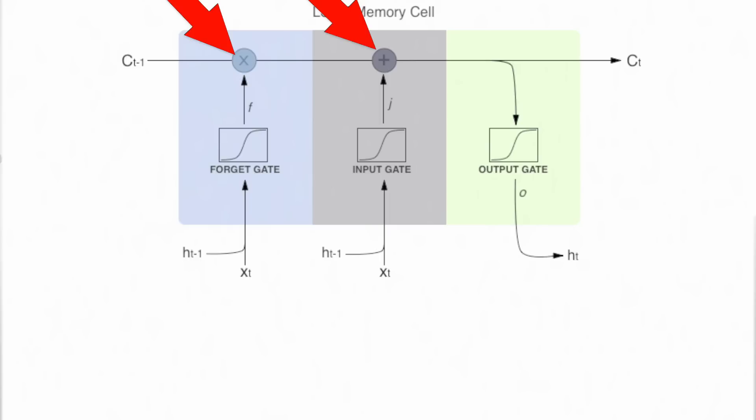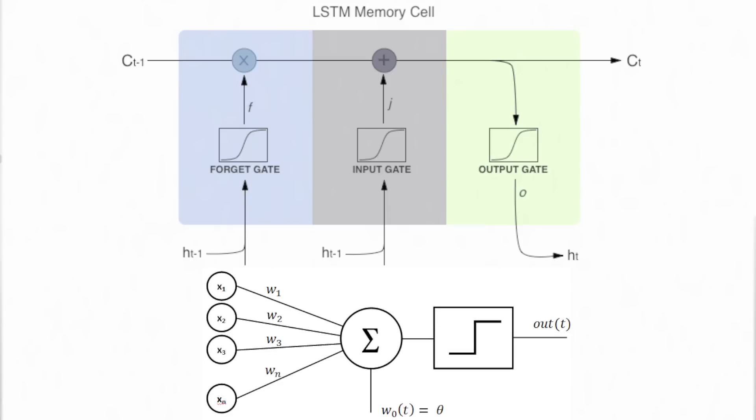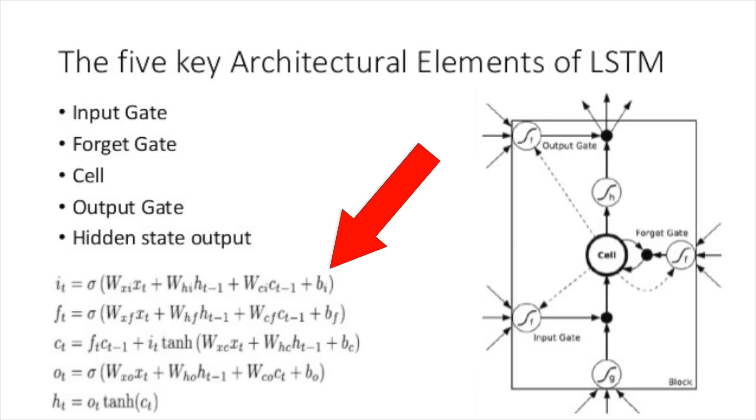They optionally let memory through. Each is a sigmoid neural net layer, and a multiplication operation. The sigmoid outputs a value between 0 and 1, which describes how much of each component should be let through. We'll represent each of the gates with the following equations, where W is the set of weights at each gate.